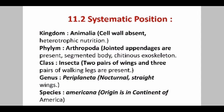The genus of the cockroach is Periplaneta. Why Periplaneta? Because it has straight wings, is nocturnal in nature, and has chewing type mouthparts. The species is Americana, because the origin of that cockroach is in Mexico and the USA. So Periplaneta americana is the scientific name of the common cockroach found everywhere in India.